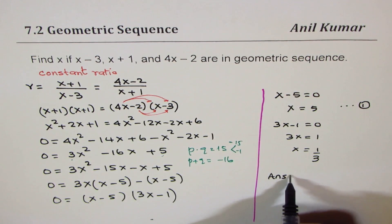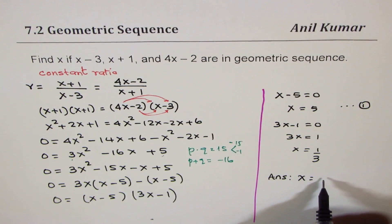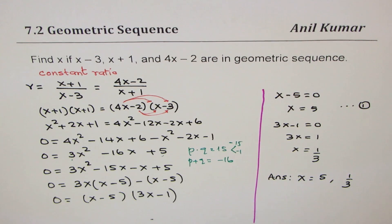So our answer is: x = 5 or x = 1/3. That is how it can be solved.